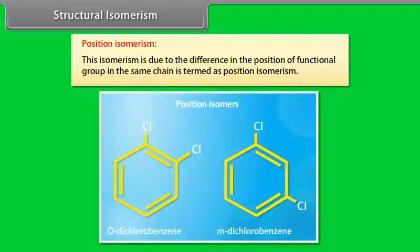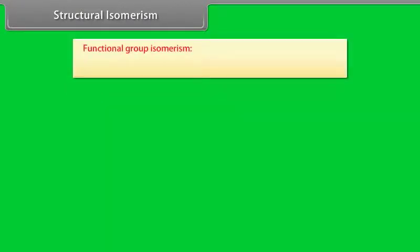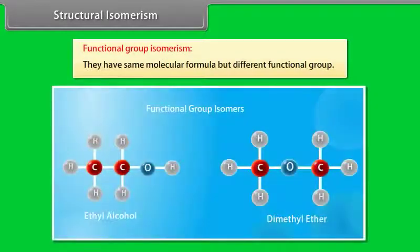Position-isomerism: this isomerism is due to the difference in the position of functional group in the same chain. Functional group isomerism: compounds have the same molecular formula but different functional groups.